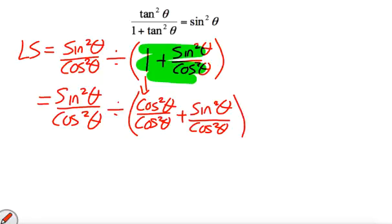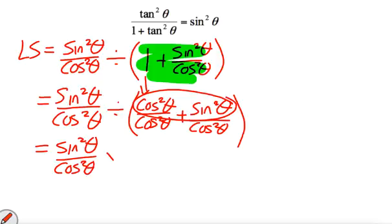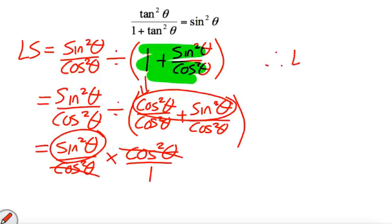All we've done is change the 1 to cos over cos over cos over cos, which is still 1. But now if you look at the top, the top is going to be equal to 1. So we can have sine squared over cos squared times cos over 1. Our cos is cancelled. We're left with sine squared, which is the right side. And we are done.